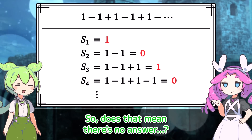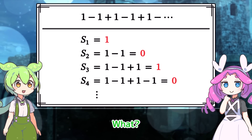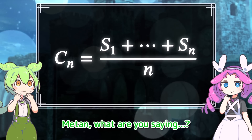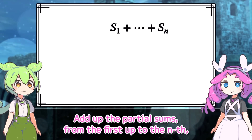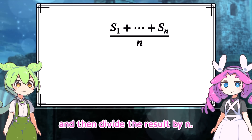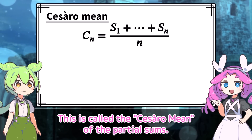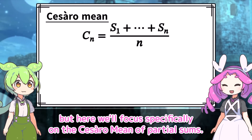So does that mean there's no answer? Then what are we supposed to do? Well, saying it oscillates could be one way to answer, but watch out! This is the Cesaro mean. Add up the partial sums from the first up to the nth, and then divide the result by n — in other words, you're taking the average of n partial sums. This is called the Cesaro mean of the partial sums. The Cesaro mean can be applied to general sequences, not just sequences of partial sums, but here we'll focus specifically on the Cesaro mean of partial sums.